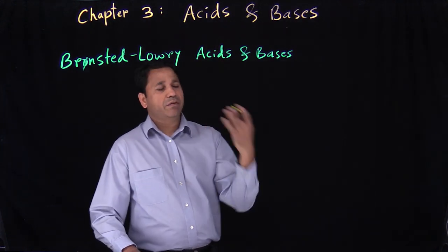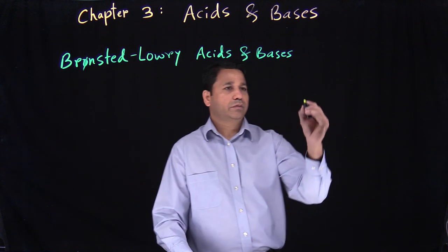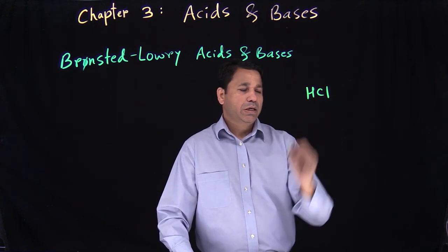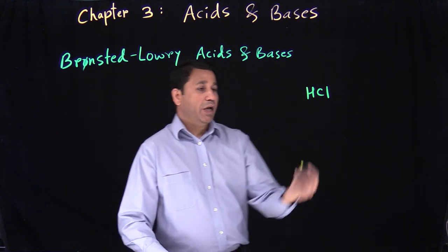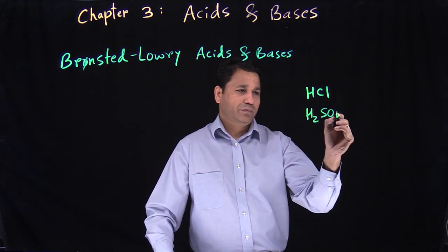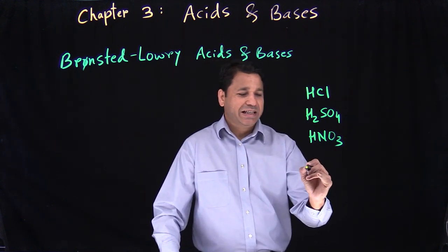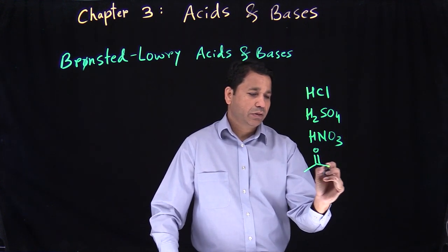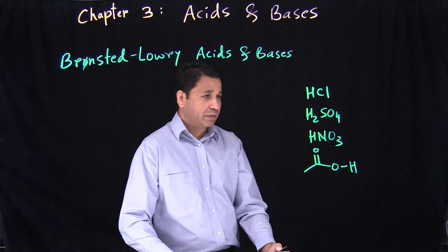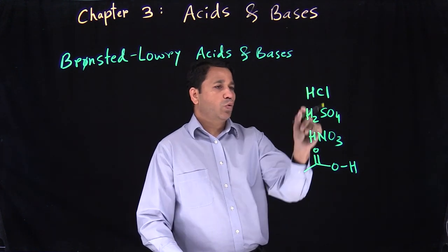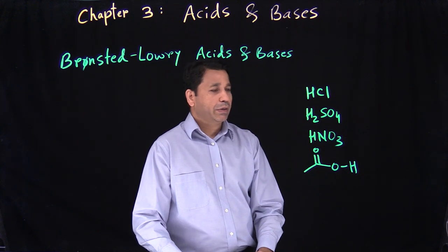So based on your experience, whenever I say something is an acid — for example, HCl — when you hear HCl, you know it's an acid. H2SO4 is an acid, HNO3, and acetic acid, which is your organic acid. So all these are acids. What is the one common thing that makes HCl, H2SO4, HNO3, and acetic acid all acids? That's the hydrogen.